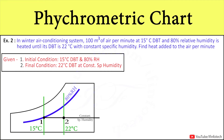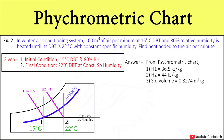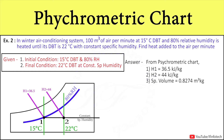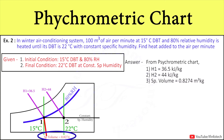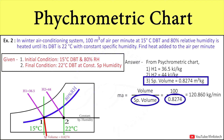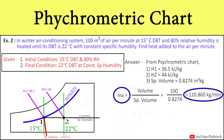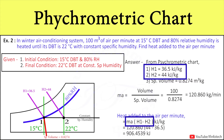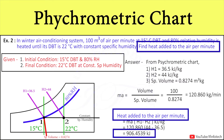From the specific enthalpy lines, h1 is approximately 36.5 kJ/kg for initial condition and h2 is 44 kJ/kg for the final condition at 22°C DBT. The specific volume line for the initial condition gives 0.8274 m³/kg. Using the volume of air (100 m³/min) and specific volume (0.8274 m³/kg), we calculate the mass of air, then use the enthalpy difference to get heat added as 906.45 kJ per minute.